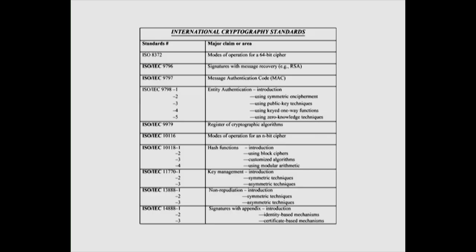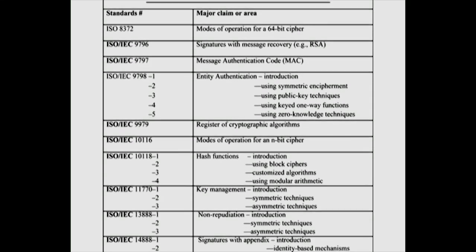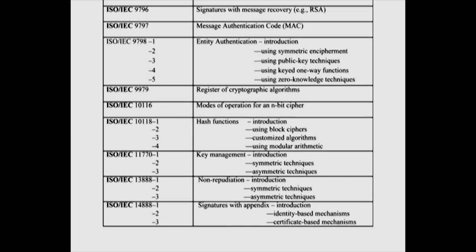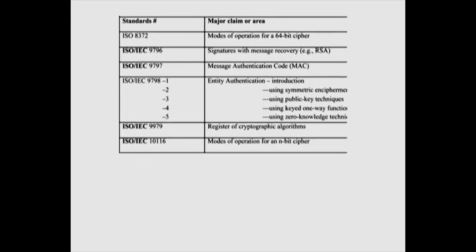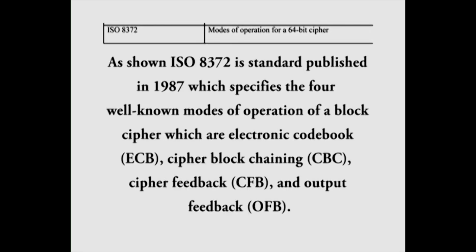The International Organization for Standardization and International Electro-Technical Commission developed standards individually and jointly in the area of cryptography. ISO 8372 is a standard published in 1987 which specifies the four well-known modes of operation of a block cipher: ECB electronic code book, CBC cipher block chaining, CFB cipher feedback, and OFB output feedback.